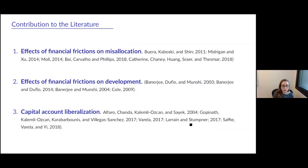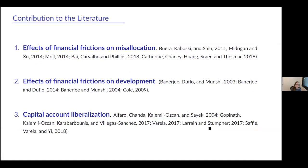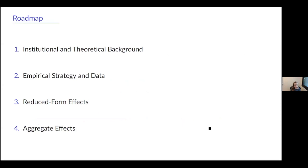We contribute to three strands of literature: the literature on financial frictions and misallocation, the literature on financial frictions and economic development, and the literature on capital account liberalization. For the remainder of the talk, I'll cover the institutional background in India, a brief conceptual framework fixing what we mean by misallocation and generating predictions for our empirical strategy, the empirical strategy and data, the reduced form results, and finally how we aggregate those reduced form effects to get an aggregate effect on treated industries' Solow residual.